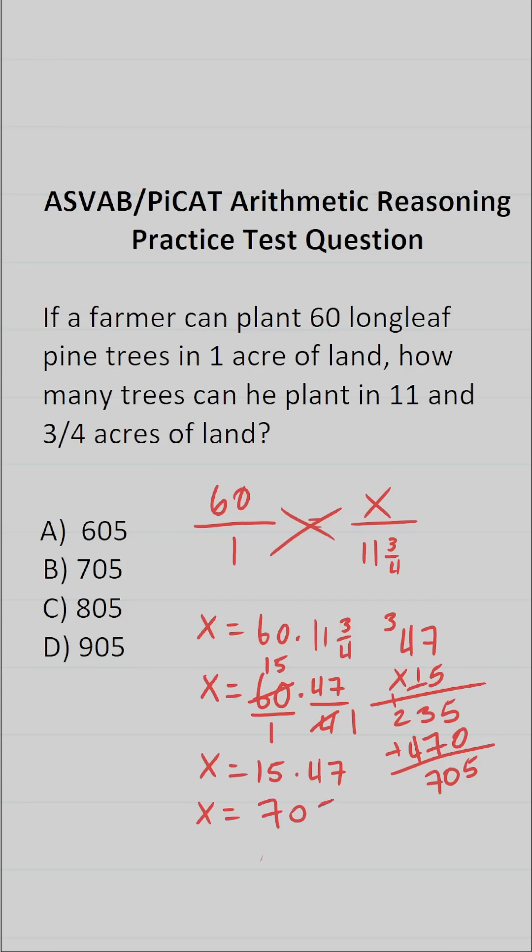So in other words, he can plant 705 of the longleaf pine trees on 11 and three quarter acres of land. So this one is B.